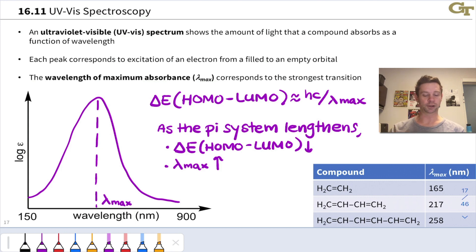And as we just mentioned, as the pi system gets longer, this HOMO-LUMO gap shrinks, and the wavelength of maximum absorption gets longer. And you can see the quantitative spin on this in this table, wherein going from ethylene to butadiene to hexatriene, the HOMO-LUMO gap is getting smaller and the wavelength of maximum absorption is getting longer. Take care.